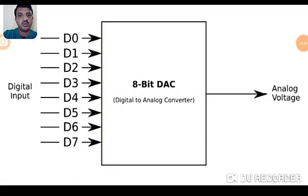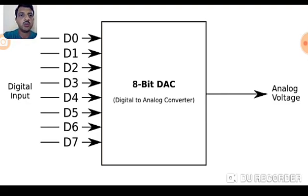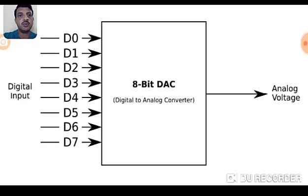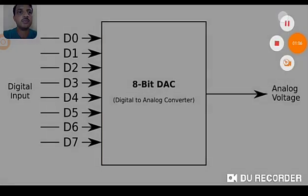Today we will see how to interface an 8-bit DAC with an 8051 microcontroller. DAC stands for digital-to-analog converter, which consists of digital inputs and one analog output. We are going to study an 8-bit DAC, which converts 8-bit digital data to a corresponding analog output. The DAC is basically used to generate different waveforms, PWM pulses, or different analog levels for a corresponding digital voltage. DAC is basically constructed using an R2R ladder circuit.